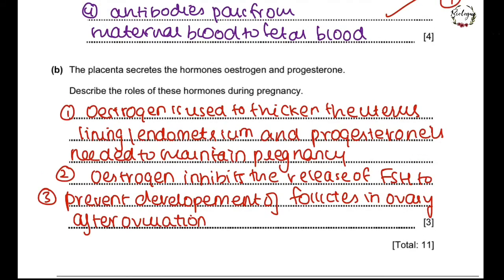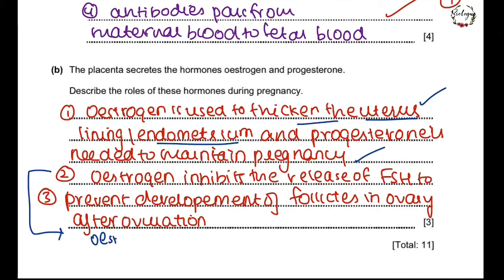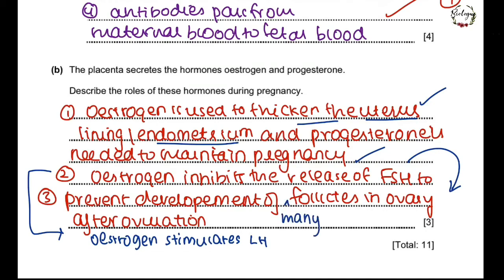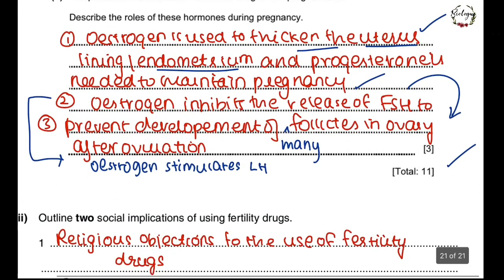The placenta secretes hormones estrogen and progesterone. Describe the roles of these hormones during pregnancy: estrogen is used to thicken the uterus lining or the endometrium; progesterone is used to maintain pregnancy. Estrogen inhibits the release of FSH and stimulates LH — so it inhibits FSH, stimulates LH, and because it inhibits FSH, it prevents the development of many follicles in the ovary after ovulation.